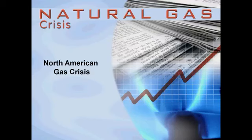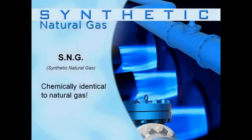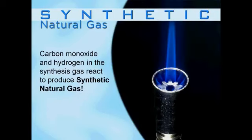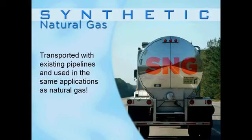The solution to the natural gas crisis is to find alternatives to natural gas to accommodate the rise in demand. This domestic shortage in natural gas can be resolved by producing synthetic natural gas from coal. Synthetic natural gas, or SNG, can be produced so it is chemically identical to pipeline quality natural gas. This causes carbon monoxide to react with the hydrogen in the synthesis gas, and the reaction produces synthetic natural gas. The synthetic natural gas is then cooled, dried, and compressed. Because SNG is chemically equivalent to natural gas and has an equivalent energy content, it can be transported through existing pipelines and tankers and used in the same applications as natural gas.